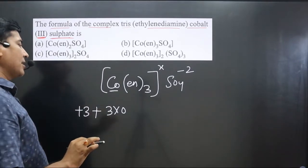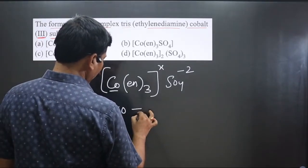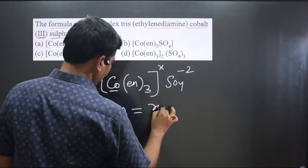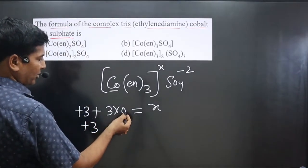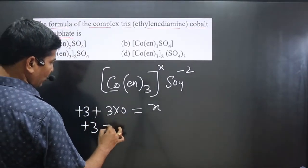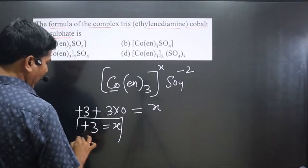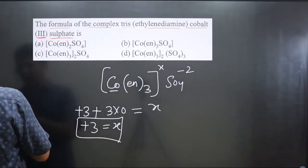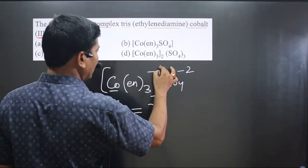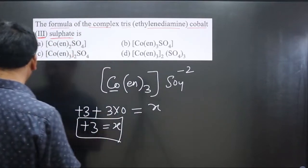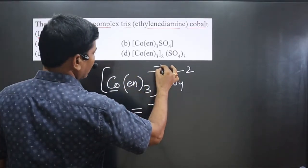Setting up the equation: cobalt is +3, and three ethylenediamine ligands each contribute zero (neutral ligands always carry zero charge), so: +3 + 3×0 = x. This gives x = +3. So the charge of the cationic complex is +3.